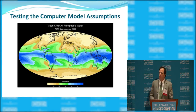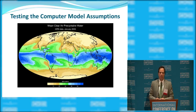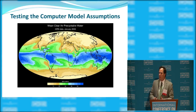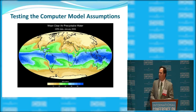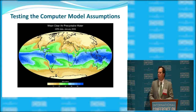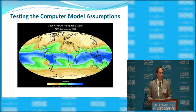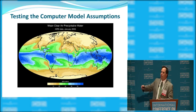Secondly, regarding cloud cover: the models assume that with a little CO2-driven warming we'll see an increase in cirrus clouds — a heat-trapping factor. But the satellite data show instead that when we get more cloud cover, it comes in the form of low-level rain clouds, which block sunlight from reaching the surface and cool the Earth. So both factors the models rely on for most of their projected warming — positive feedbacks — are actually negative feedbacks. That's why the models failed to anticipate the pause in warming, failed to hindcast, and why the dramatic warming they predict for the future is not going to happen.